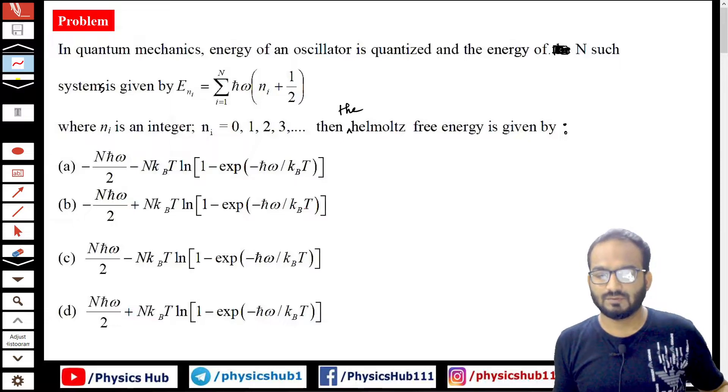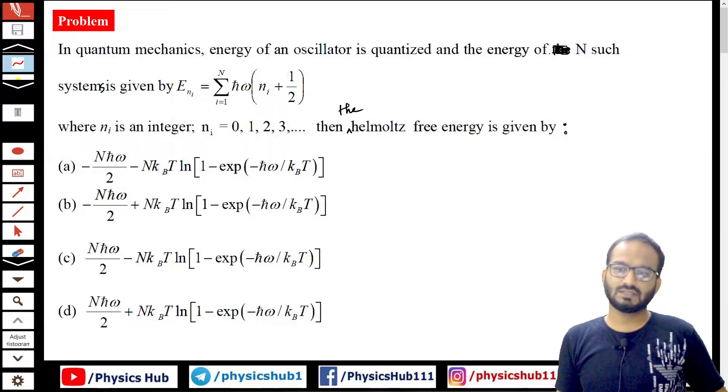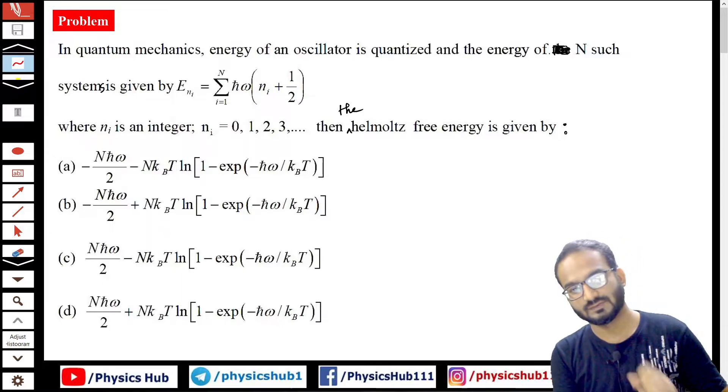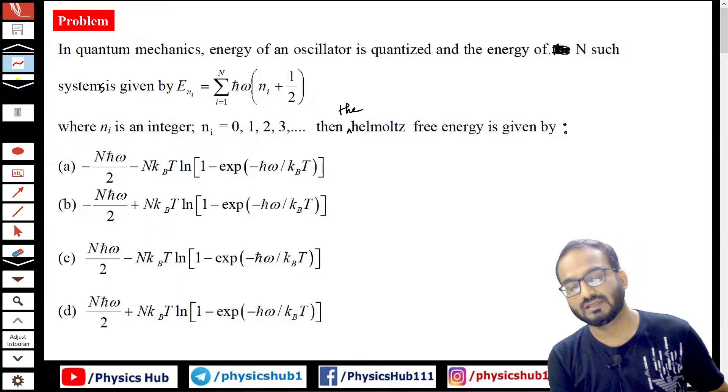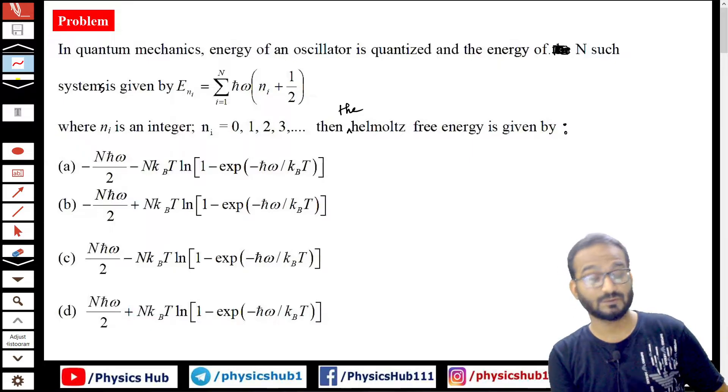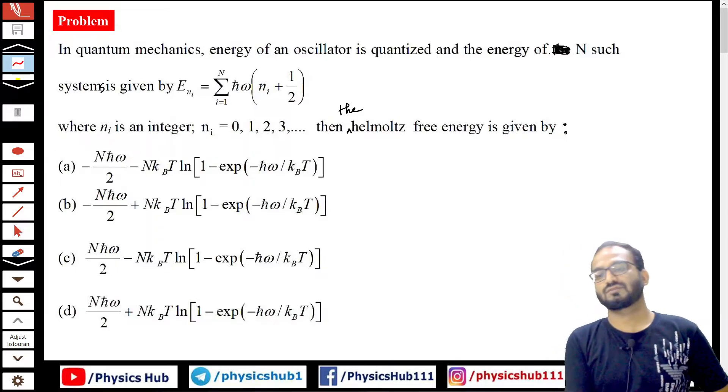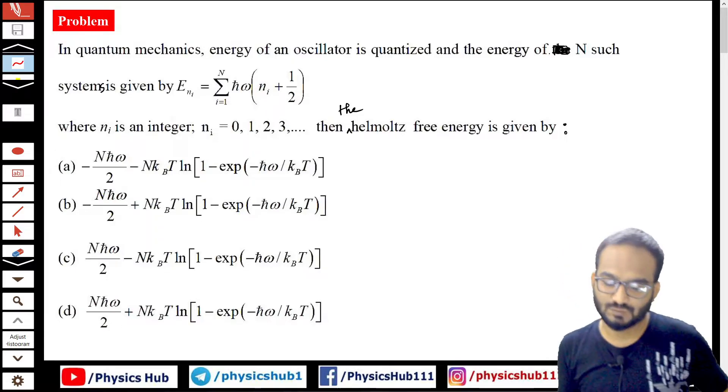Let me read the problem for you. In quantum mechanics, energy of an oscillator is quantized and the energy of N such systems is given by this expression, where n is an integer running from 0, 1, 2, 3... where 0 is the ground state, 1 is the first excited state, and so on. Then the Helmholtz free energy is given by—